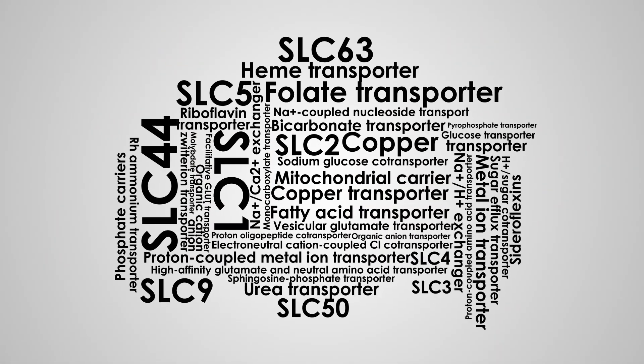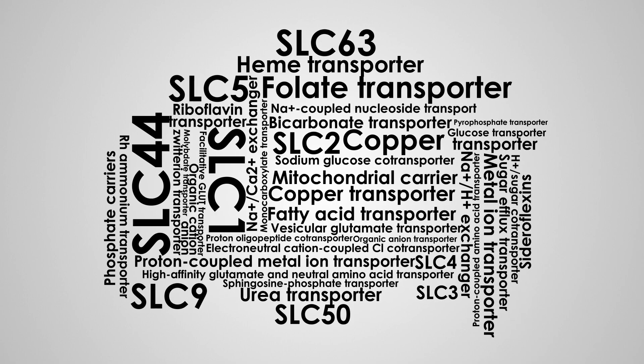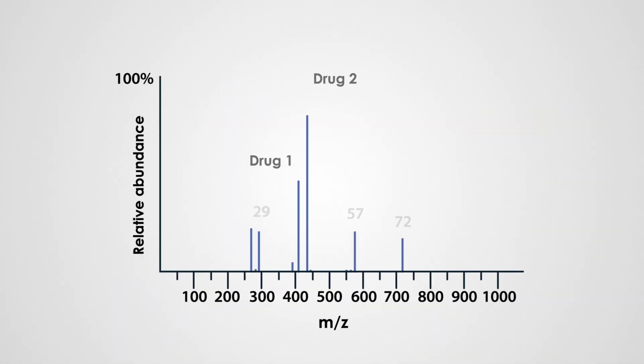In humans, there are over 500 types of transporters. Many of their natural substrates are unknown. To learn more, Professor Kell's team has developed methods to measure transport in and out of cells. One method is based on mass spectrometry. It can identify small molecules.